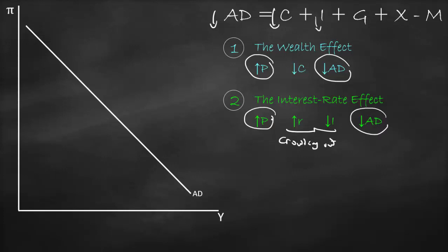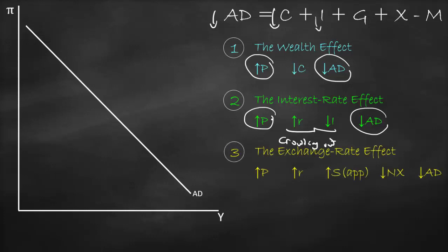If investment goes down, aggregate demand goes down, giving us a negative relationship between price and aggregate demand — that is why the aggregate demand curve is downward sloping.